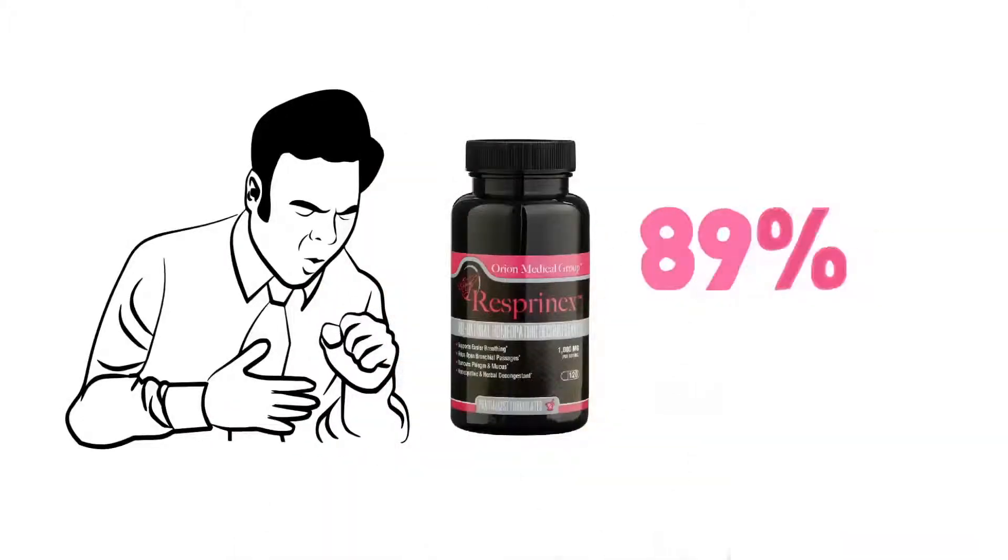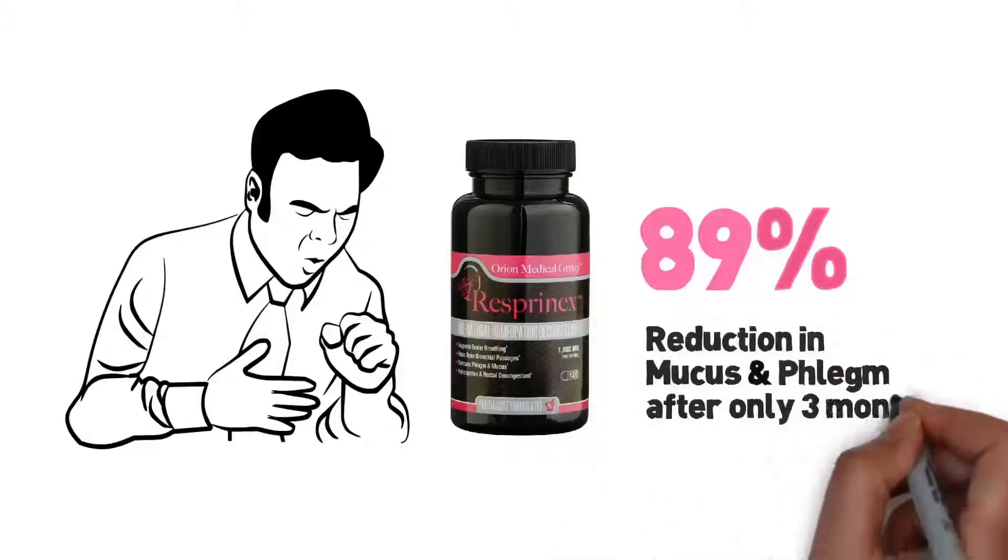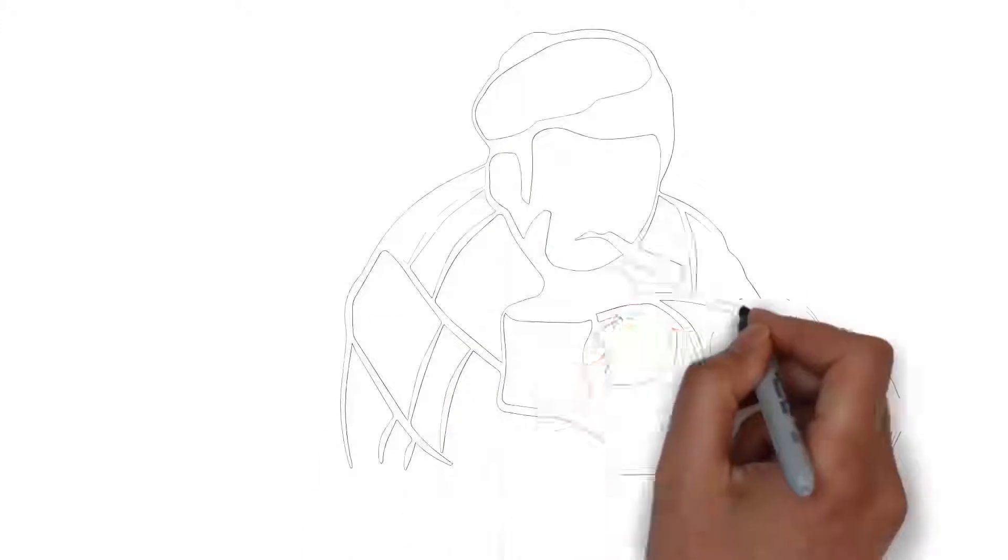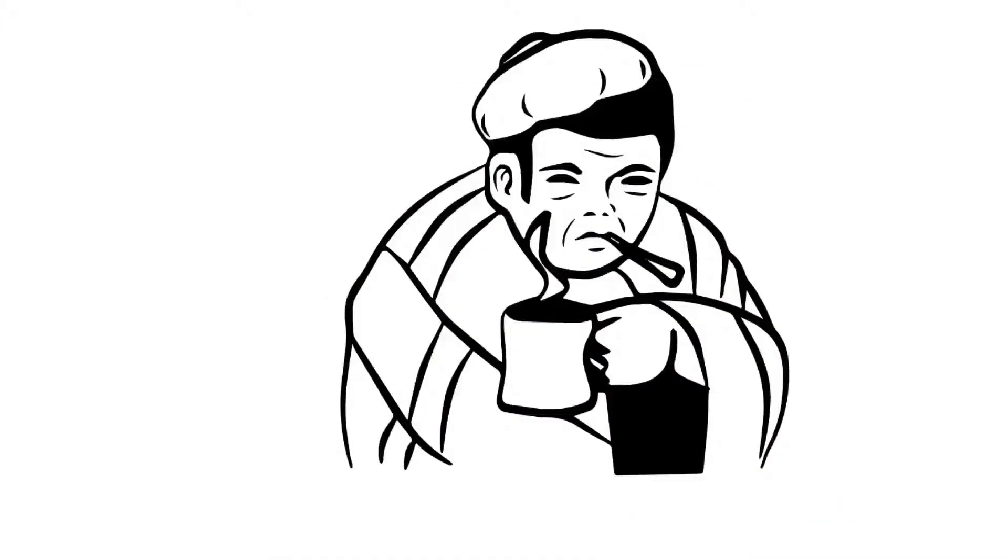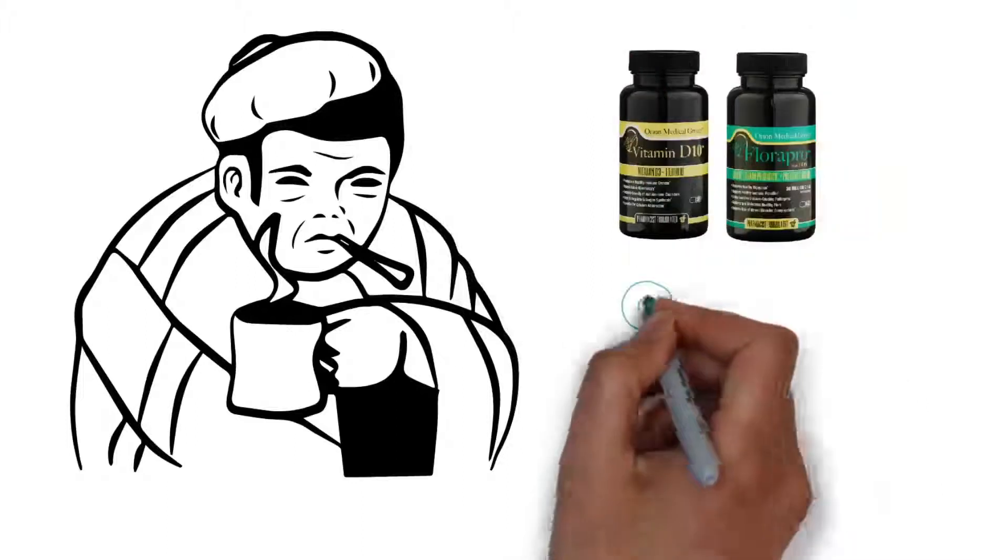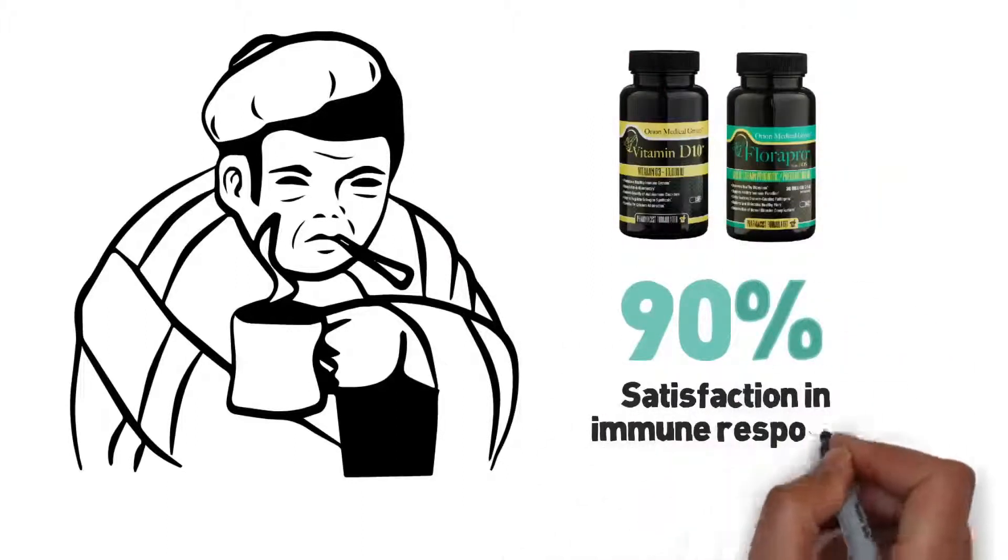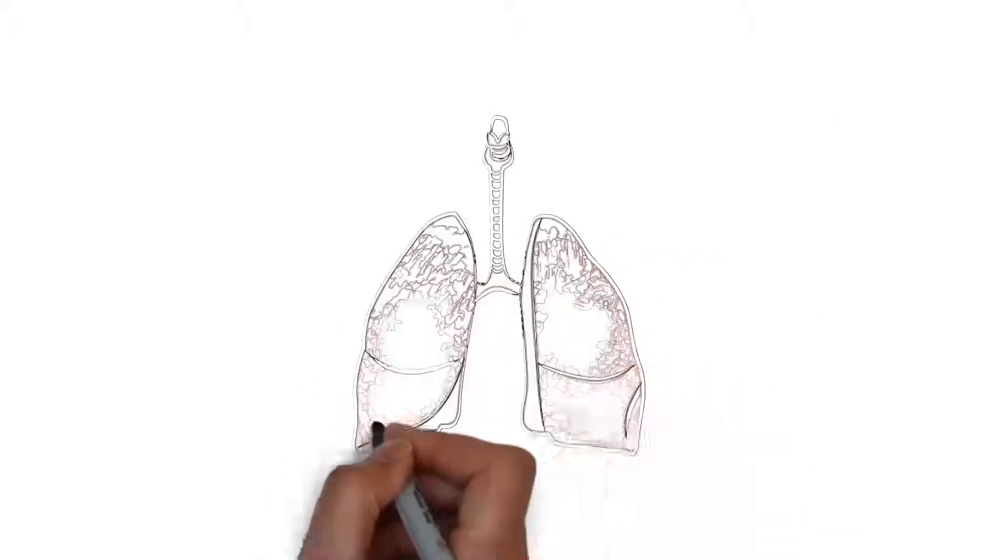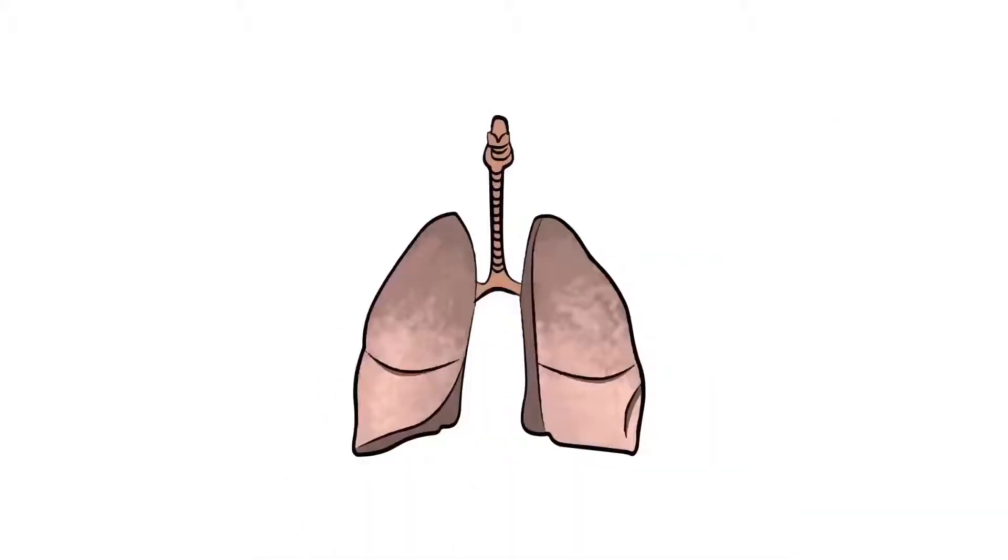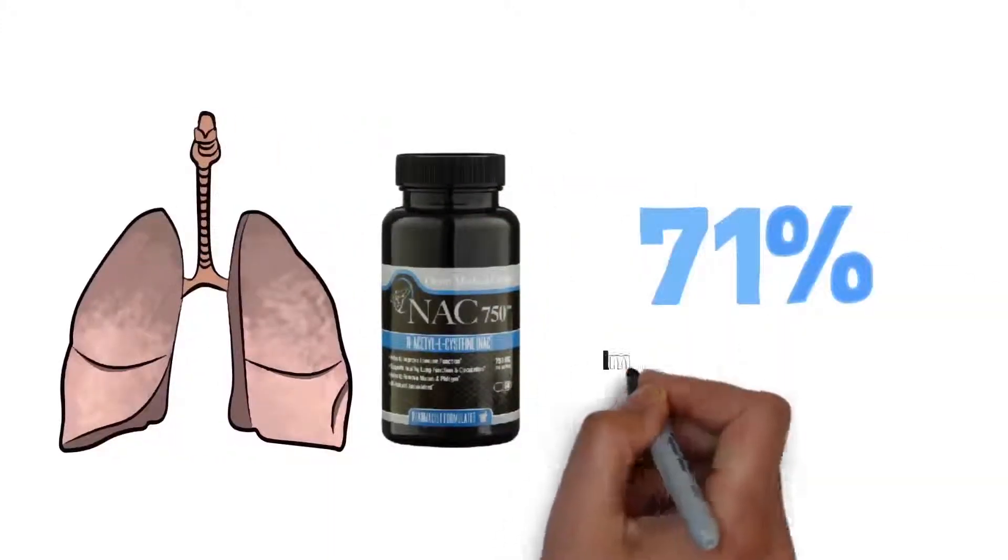An all-natural decongestant to rid the body of excess mucus and phlegm. You have a compromised immune system making you more susceptible to illness, and we have vitamin D10 and flora Pro to modulate and enhance your immune system, preventing further illness. You have damaged lung tissue from the buildup of fibrin, and we have NAC 750 to help repair.